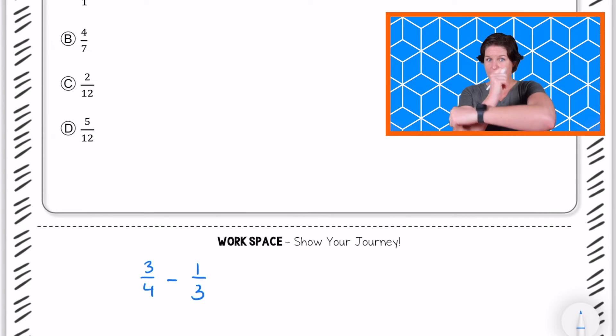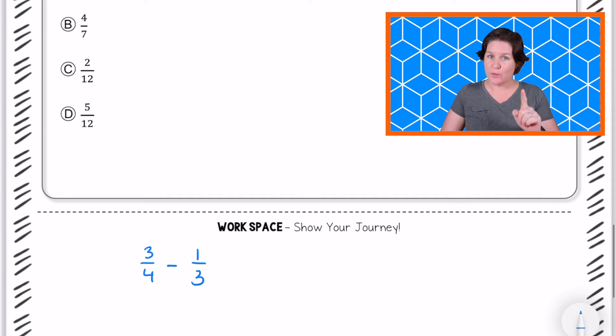I know that when we add or subtract, our denominators must match, and I don't see matching denominators here. So what I'm going to do is find the least common denominator of four and three, my two denominators that I have. How do I do that? Well, I put the multiples of each one of those there.